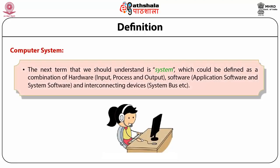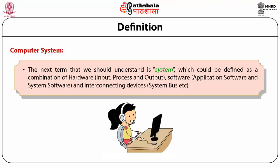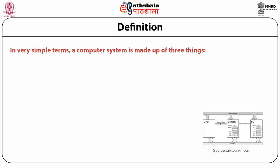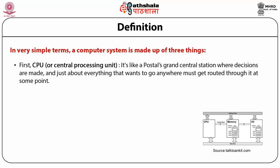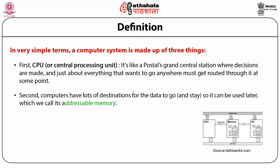A computer system should be defined as a combination of hardware — input, process and output — software, application software and system software, and interconnected devices, system buses, etc. In simple terms, a computer system is made up of three things: first, the CPU or central processing unit, like a Grand Central Station where decisions are made; second, address memory, where pieces of data live when not being processed by the CPU; third, input and output devices that do things with data so we can see, hear or interact with it.